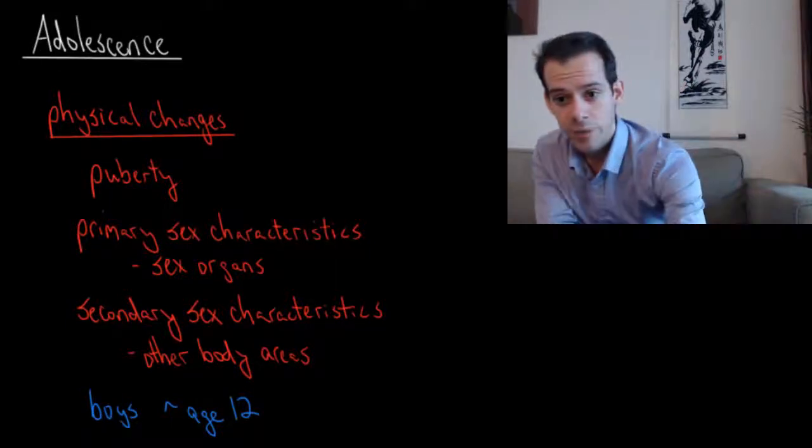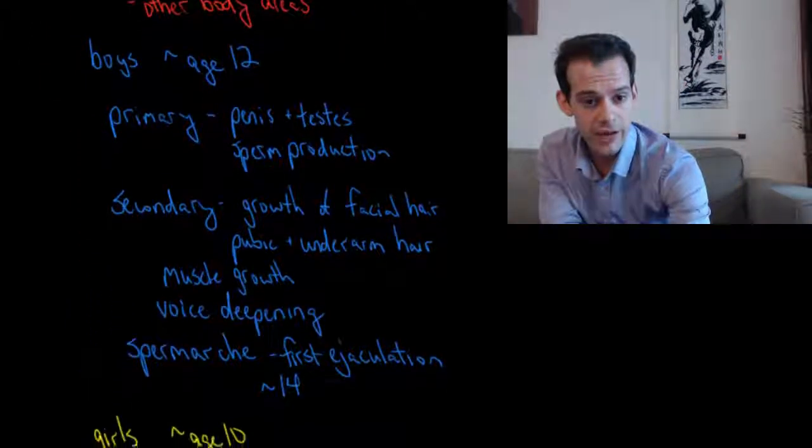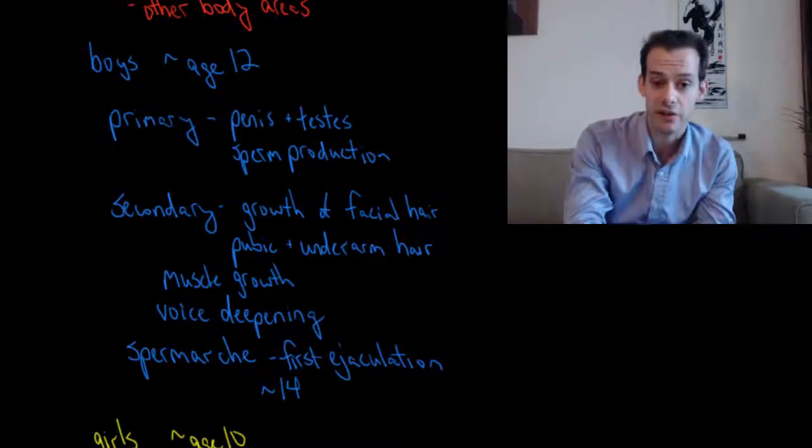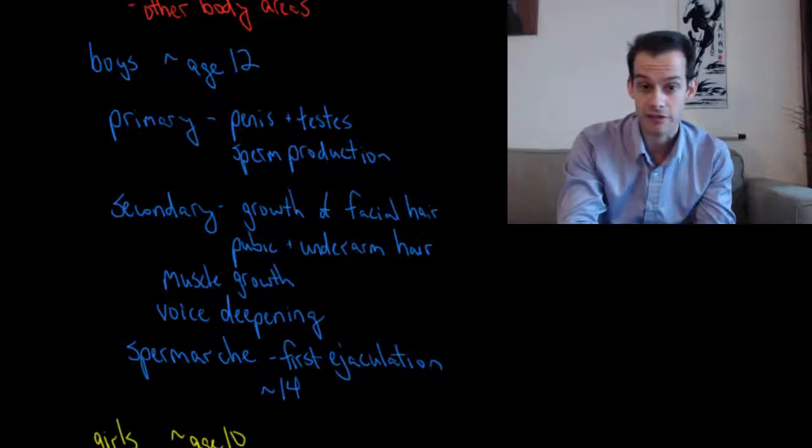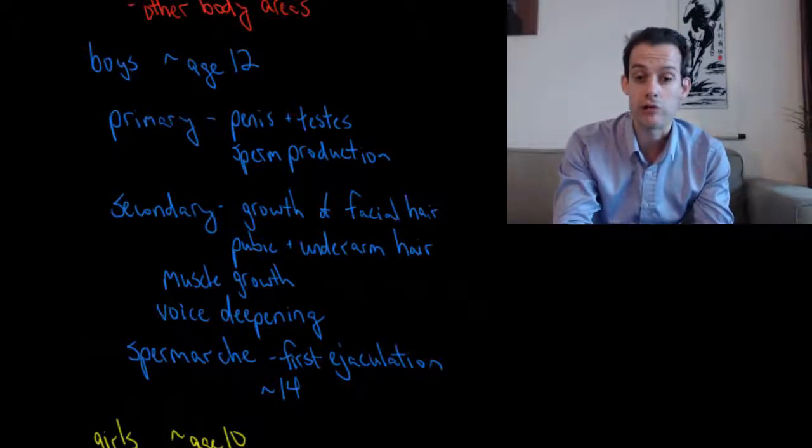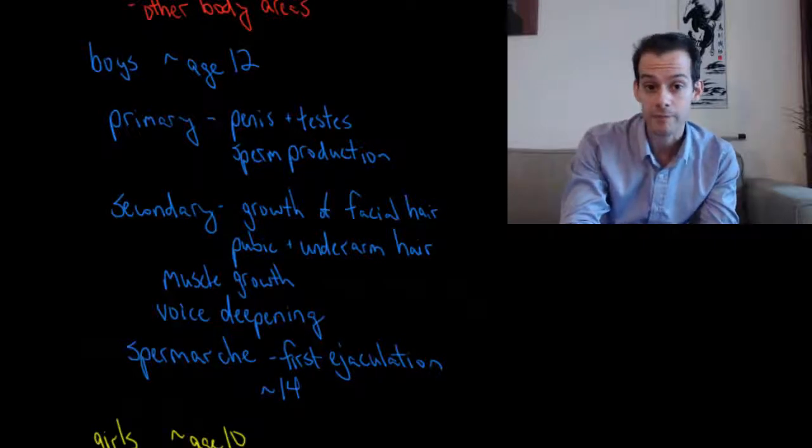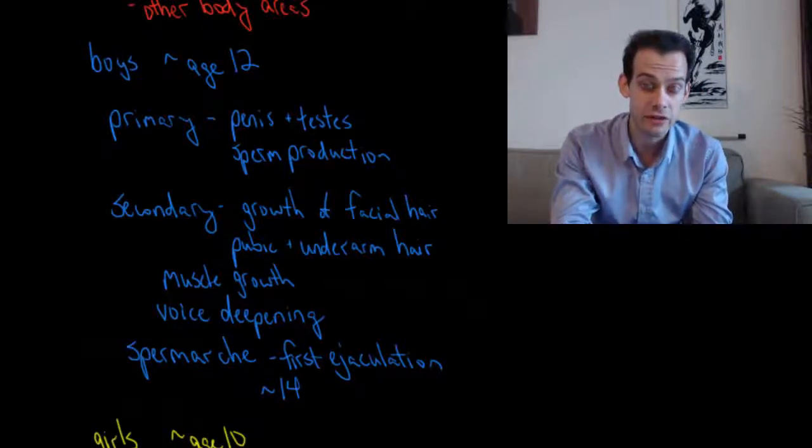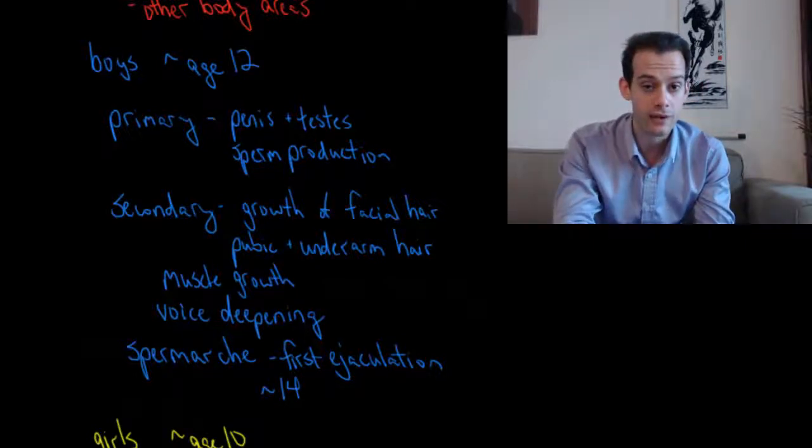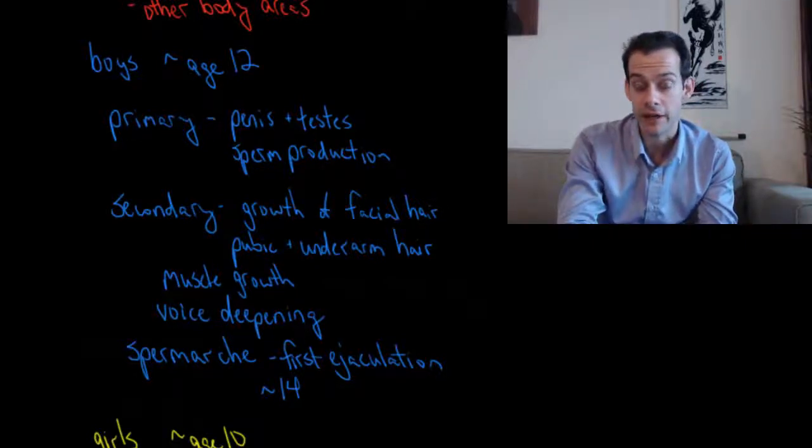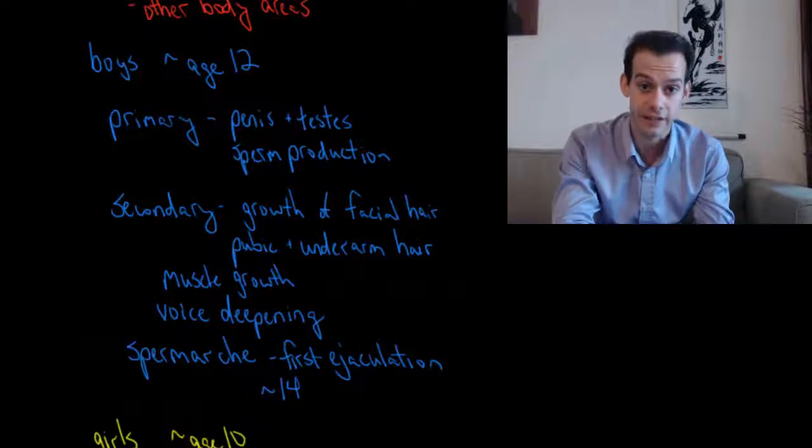In boys, puberty often begins sometime around age 12 and the primary sex characteristics would be growth of the penis and testes and the beginning of sperm production. Secondary sex characteristics would include things like the growth of facial hair or the growth of pubic and underarm hair, in addition to increases in muscle growth and deepening of the voice. Around age 14, boys will experience spermarchae, which refers to their first ejaculation.